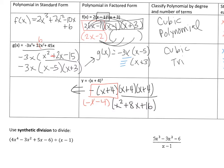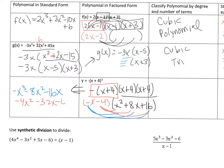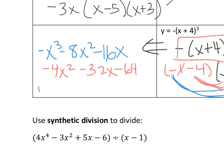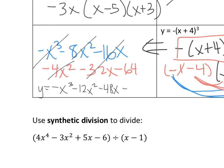Over here I'm going to show the multiplication: multiply to get negative x cubed, multiply these two to get negative 8x squared, multiply these two to get negative 16x. And then negative 4x squared and negative 32x, and negative 64. So in the end, you write this in standard form: y equals negative x cubed minus 12x squared minus 48x minus 64.